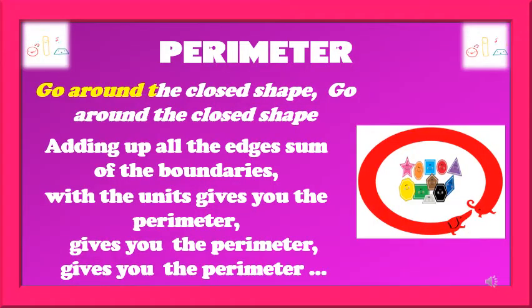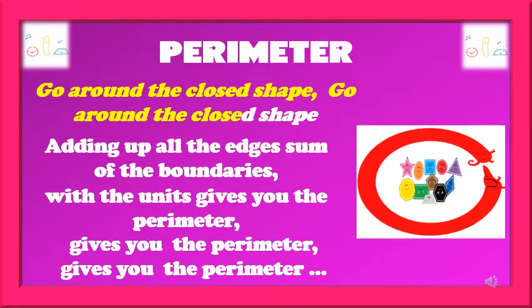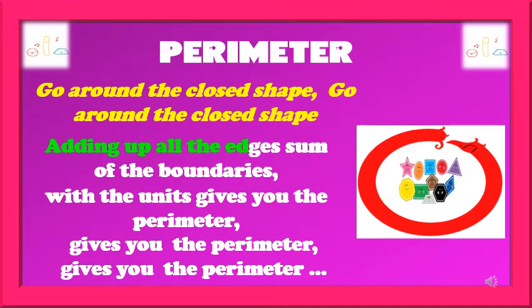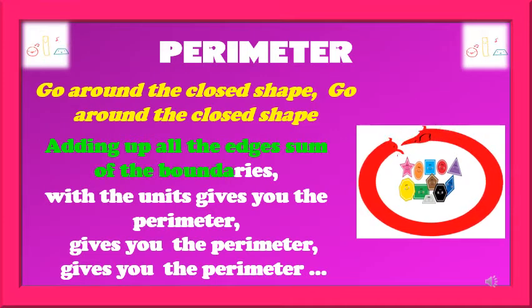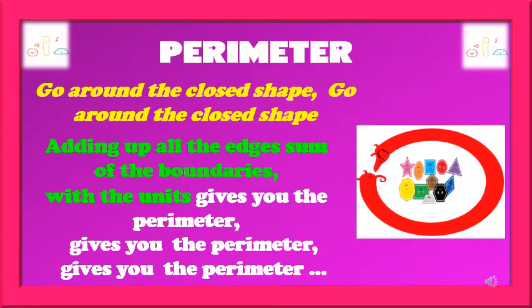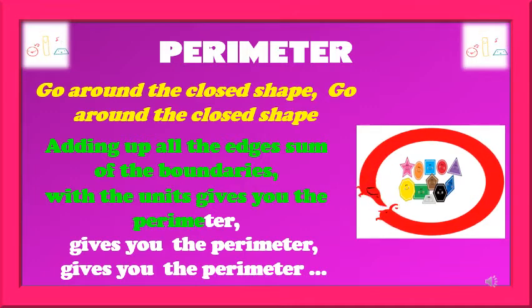Go around the flow shape, go around the flow shape, adding up all the edges, some of the boundaries, with the units gives you the perimeter.